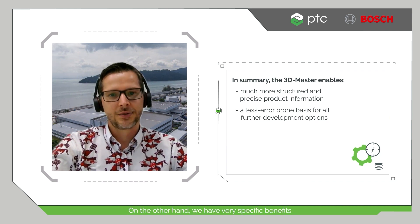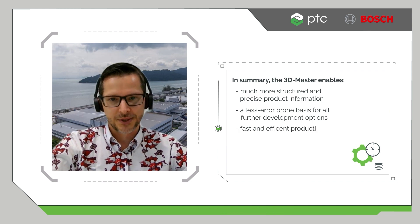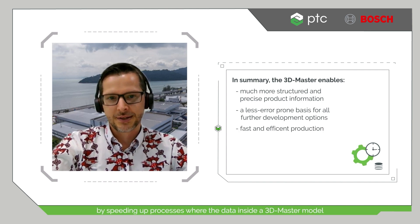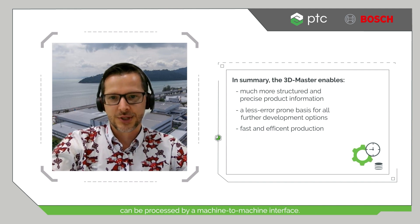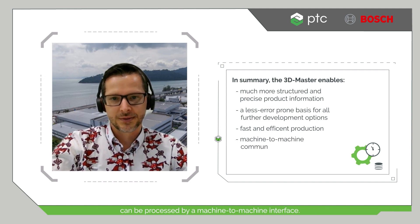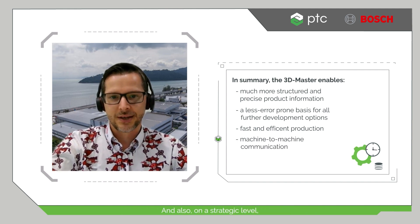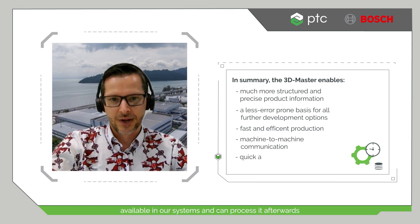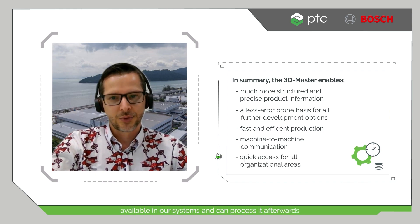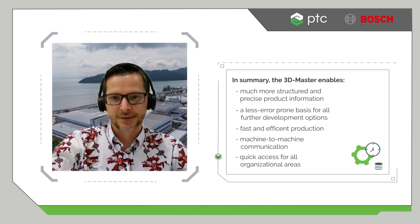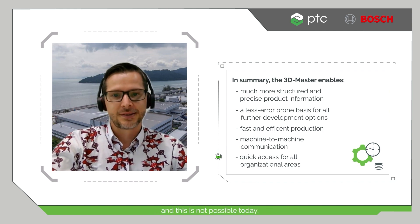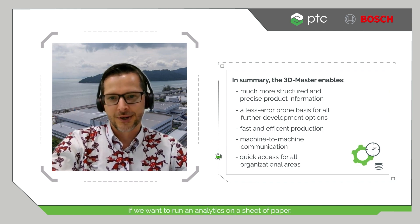On the other hand, we have very specific benefits by speeding up processes where data inside a 3D Master model can be processed by a machine-to-machine interface. On a strategic level, we make information from mechanical engineering available in our systems and can process it afterwards, for example for reporting and analytics — which is not possible today if the data only exists on a sheet of paper.